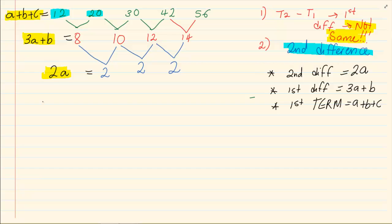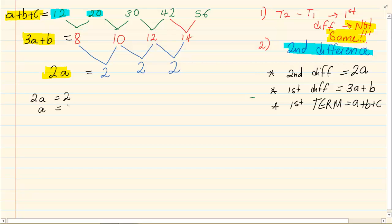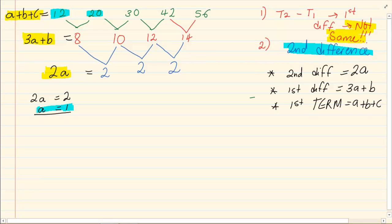Now we are simply going to equate. 2a is equal to 2, so I solve for a: a is equal to 1. My second equation is 3a plus b is equal to 8, and I already have a equals 1.